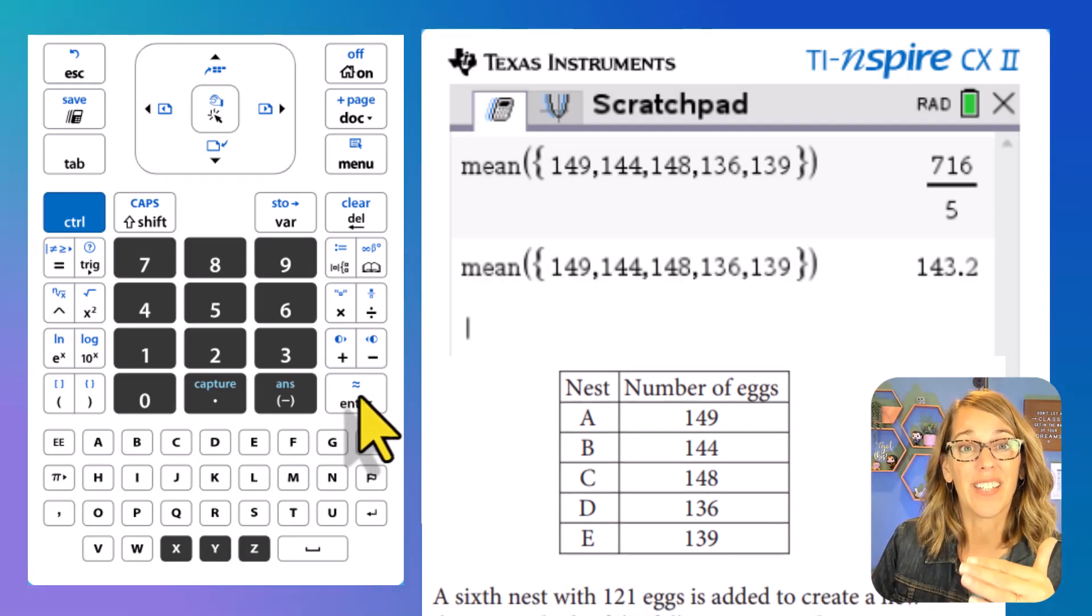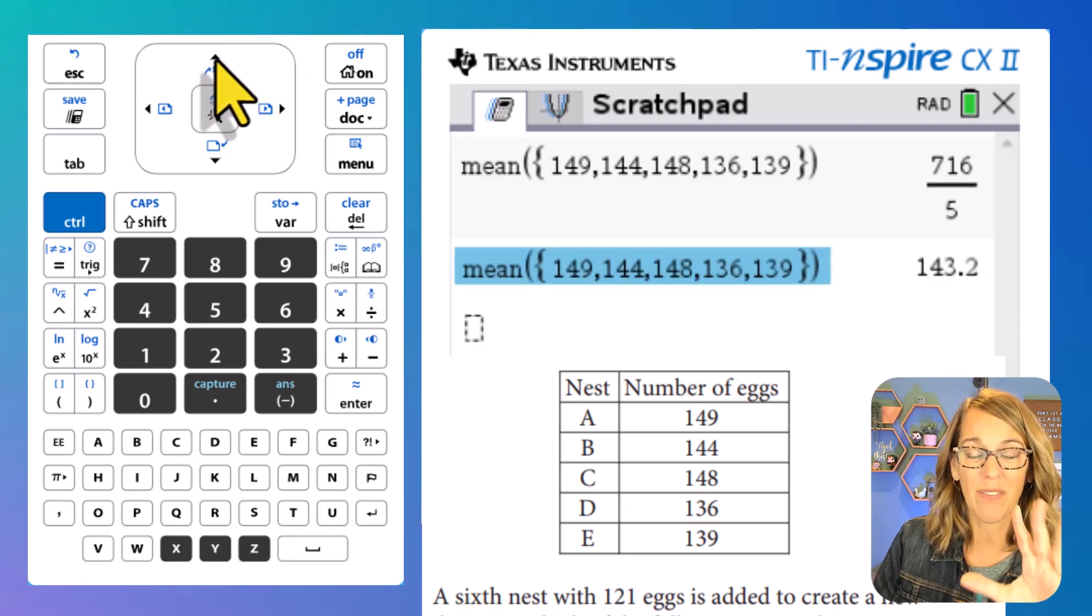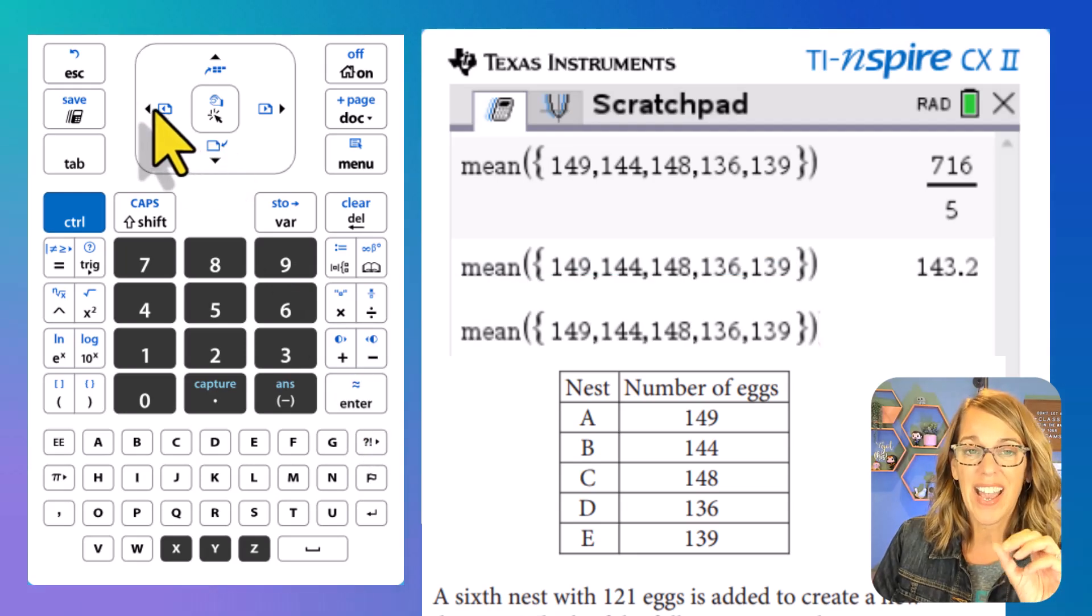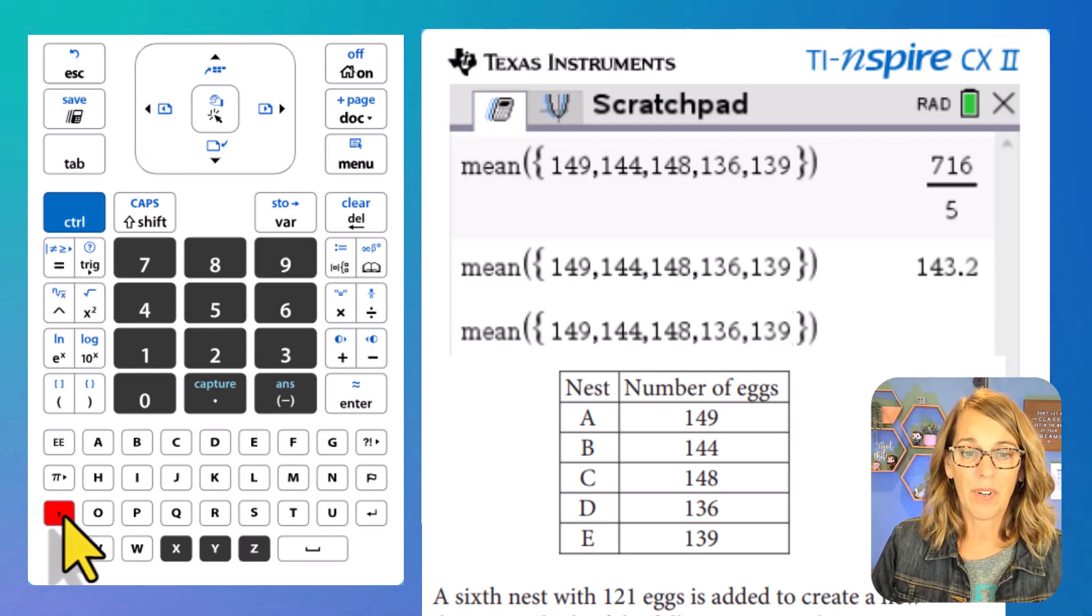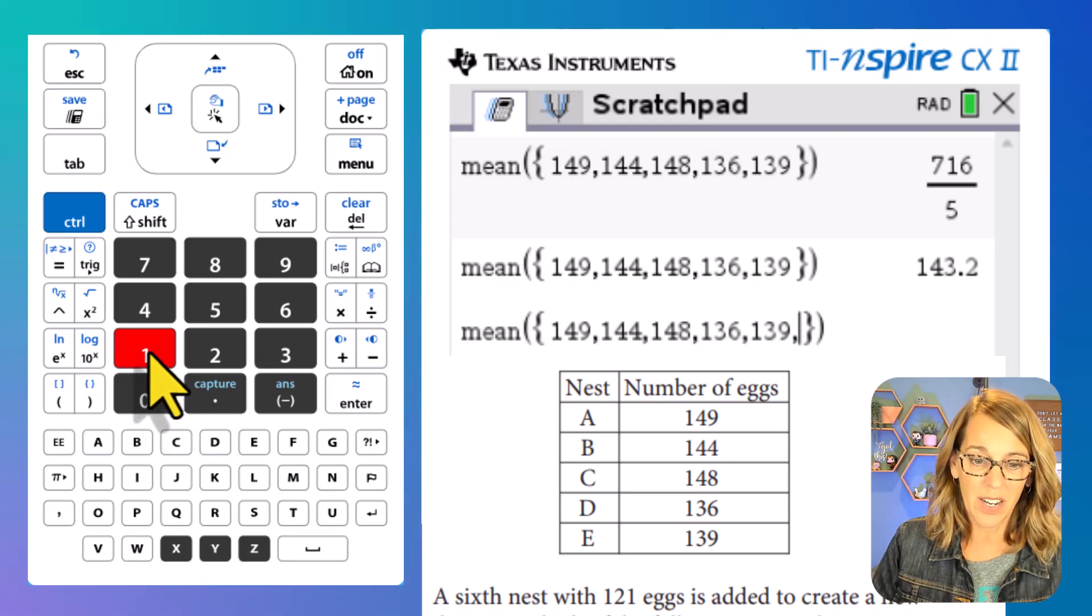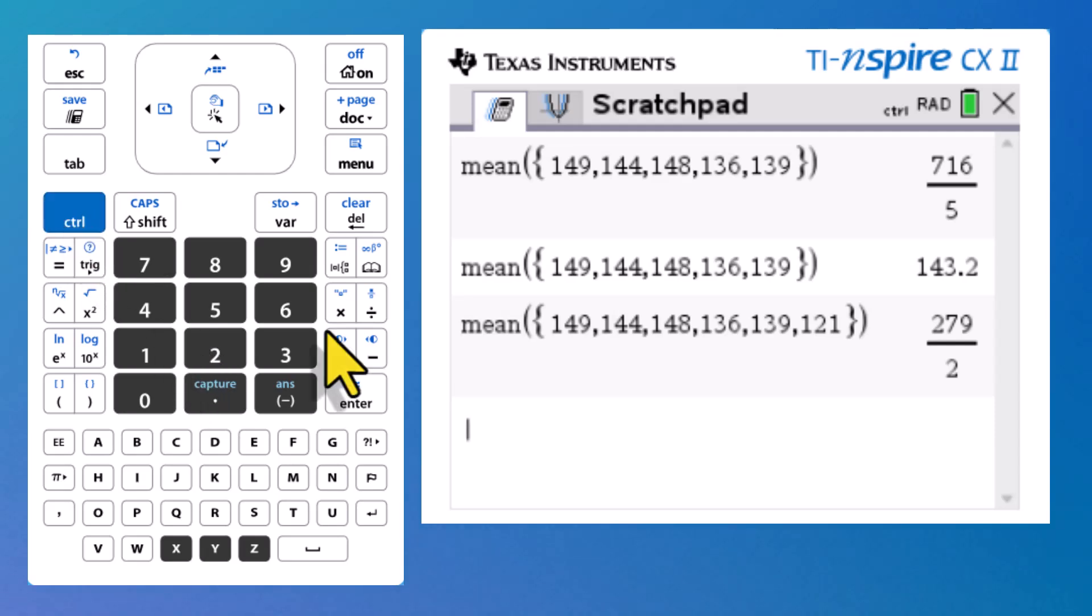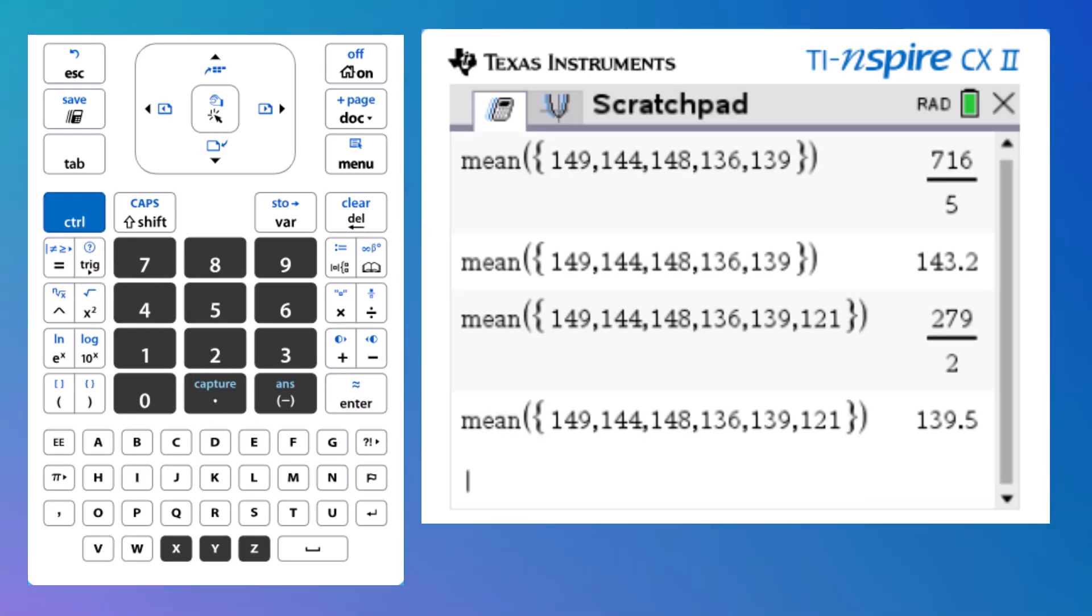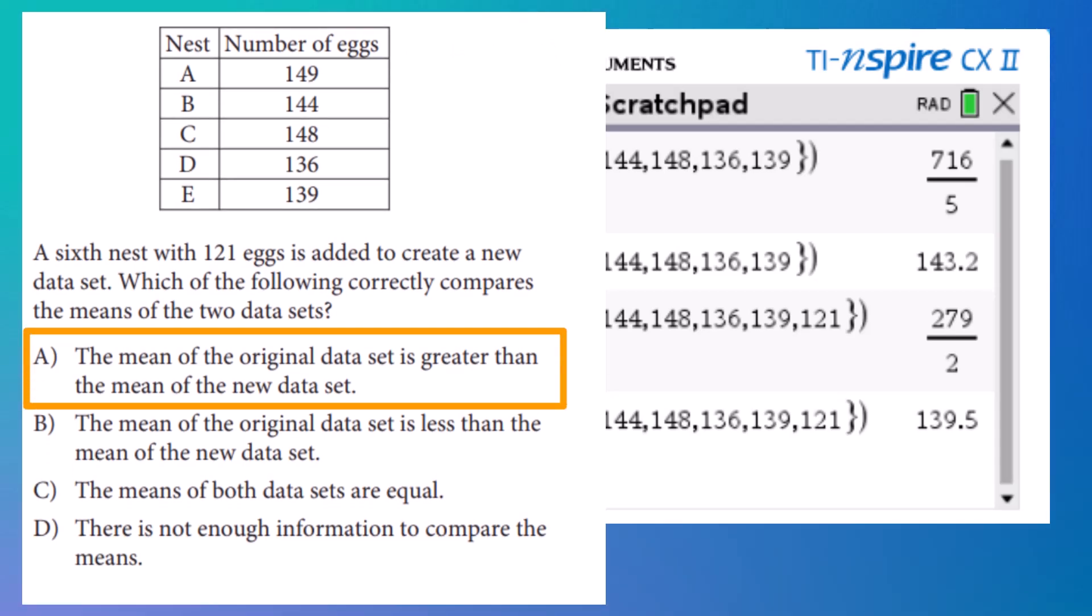Now it's really easy to find the mean of the second set. I'm going to start with the first. Let's arrow up until we get to that first mean. I'm going to hit enter to choose it. And I just want to add one additional data value. So next to the 139, I just arrowed back. So I'm right next to the 139. I'm going to put a comma here followed by my additional data value of 121. And then I hit enter again. I want CTRL enter. I could have done that to begin with, and I get 139.5. So that original data set was higher than the new data set, which means our answer there is A.